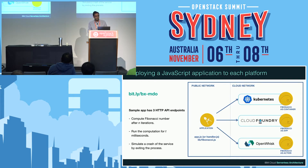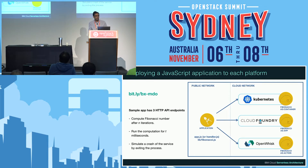There's a sample application that computes Fibonacci numbers up to a number of iterations. What we can do with this application is simulate a crash and then decide what happens. We'll talk through how we would deploy this application in these three environments, run it, and look at what responsibilities we have when something happens to it.